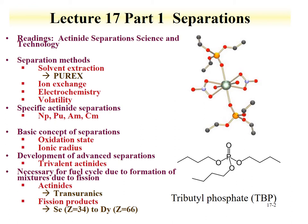Reduction and oxidation can both be used. We'll also explore volatility-based separations, where the target radionuclide is separated by forming a volatile species. The fourth part of this lecture will review specific actinide separations from Neptunium, Plutonium, Americium, and Curium — these are reviews from previous lectures.